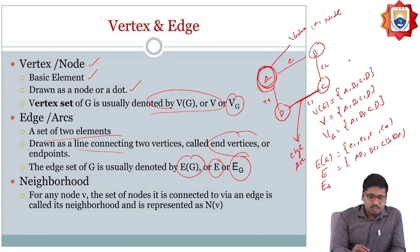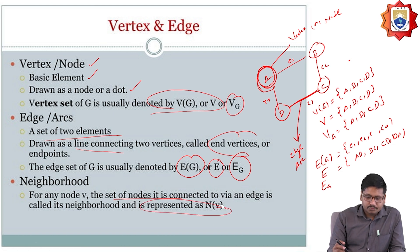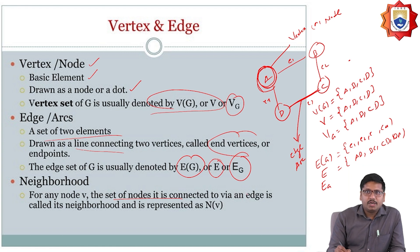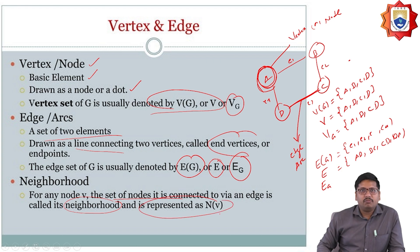Neighboring node — so what is the neighborhood? The neighborhood means for any node v, the set of nodes that is going to be connected by an edge is called neighborhood, and it should be represented as the neighborhood of v.